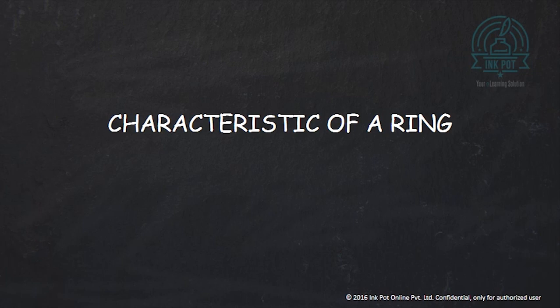So there is this possibility of such an integer, say n, where if we add any element n times we get 0. We look at the least such integer. Here, if we were adding any element of Z2 twice, four times, or six times, we were getting 0. The number 2 was the least among all these integers. This motivates the definition of the characteristic of a ring.